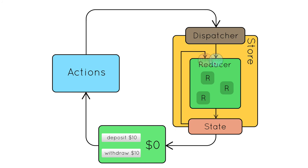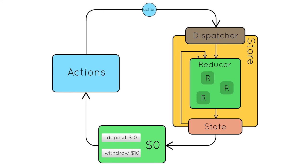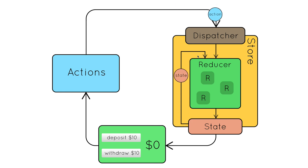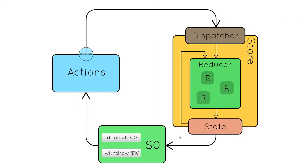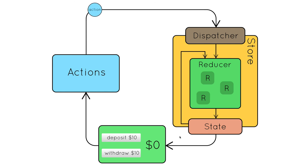Any component from the React tree can send an action, which will return a new state. That new state will be available to all components at any level in the React component tree. The advantage is that a child component is not dependent on a parent, and a parent is not dependent on a grandparent to receive data. Each individual component can talk directly to the Redux store to get data or send an action. This subscribing mechanism happens internally because we use the react-redux library, using connect as middleware, with the two helper methods mapStateToProps and mapDispatchToProps.